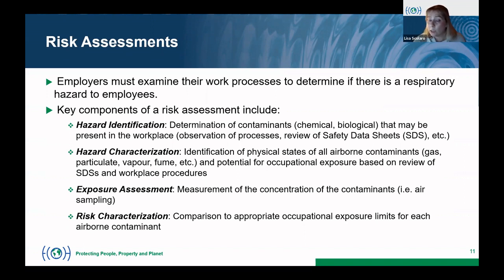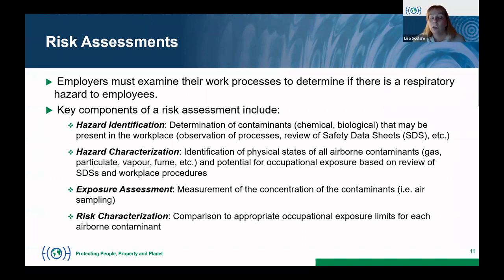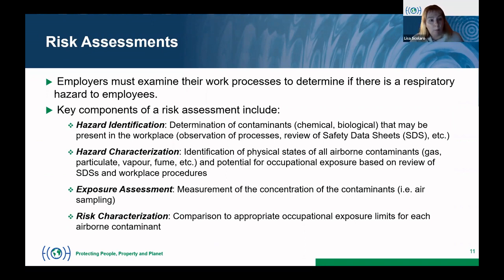Once you determine the state of the hazard, the third step is your exposure assessment — completing air sampling and measuring the concentrations of contaminants present in air. With that data, you can do a full risk characterization, which essentially means comparing the airborne concentrations of your contaminants to occupational exposure limits — what legislation or guidelines say is acceptable for levels of that contaminant to be present in air.